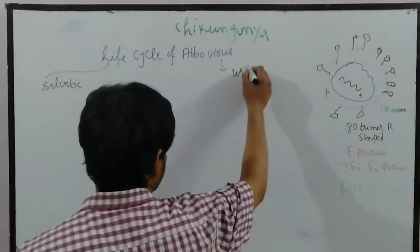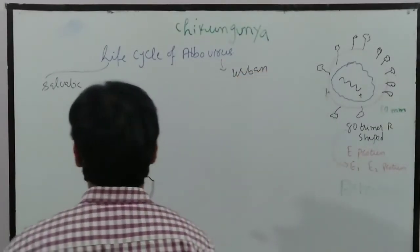Welcome again guys. So the life cycle — let me write: life cycle of Arbovirus. Now these arboviruses are transmitted through two life cycles. The first we call Sylvatic and the other we call Urban.